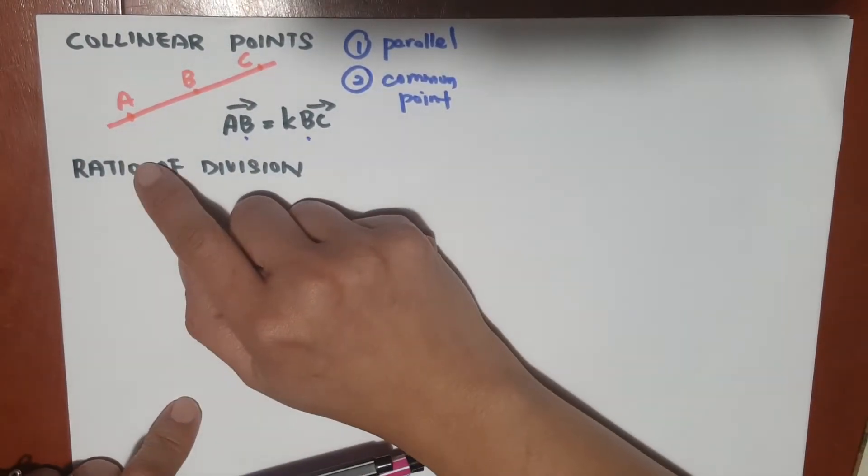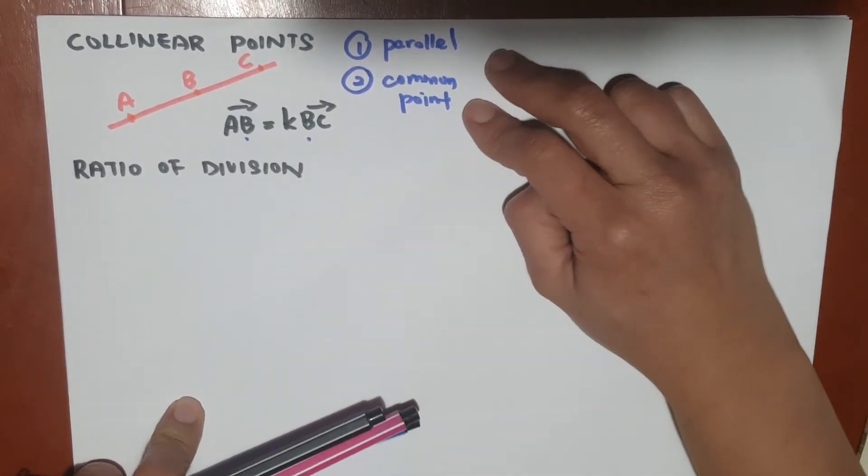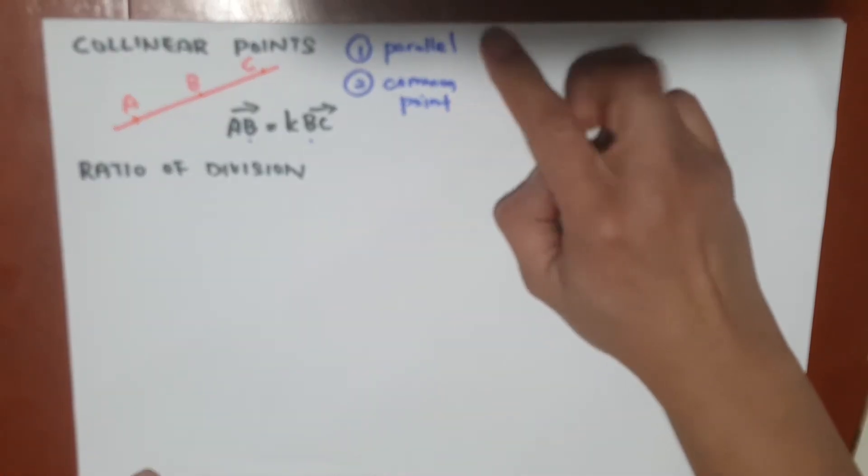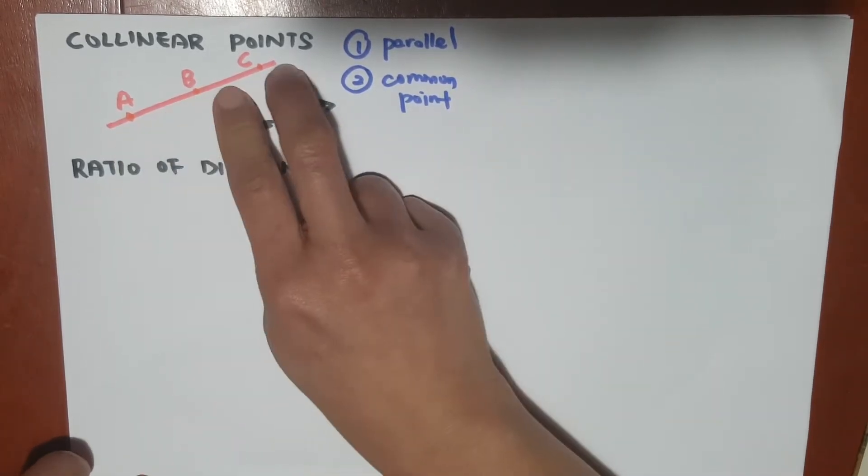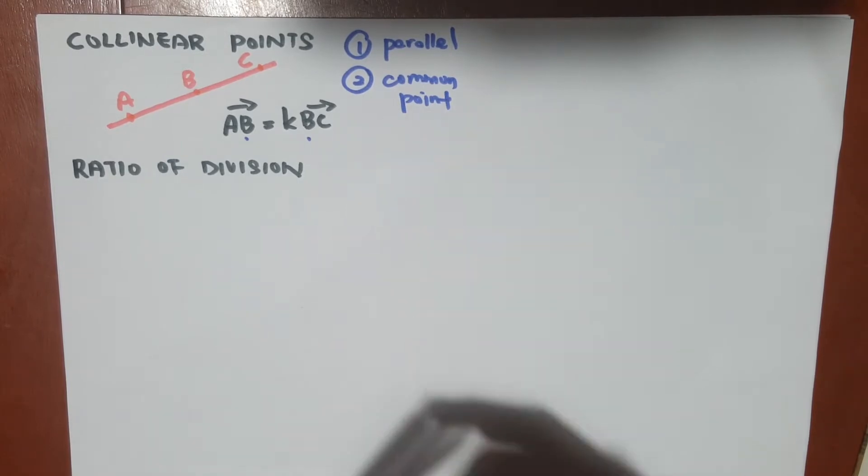In order to find that the points are collinear, they have to satisfy these two criteria: number one, the vectors must be parallel, and there must be a common point.